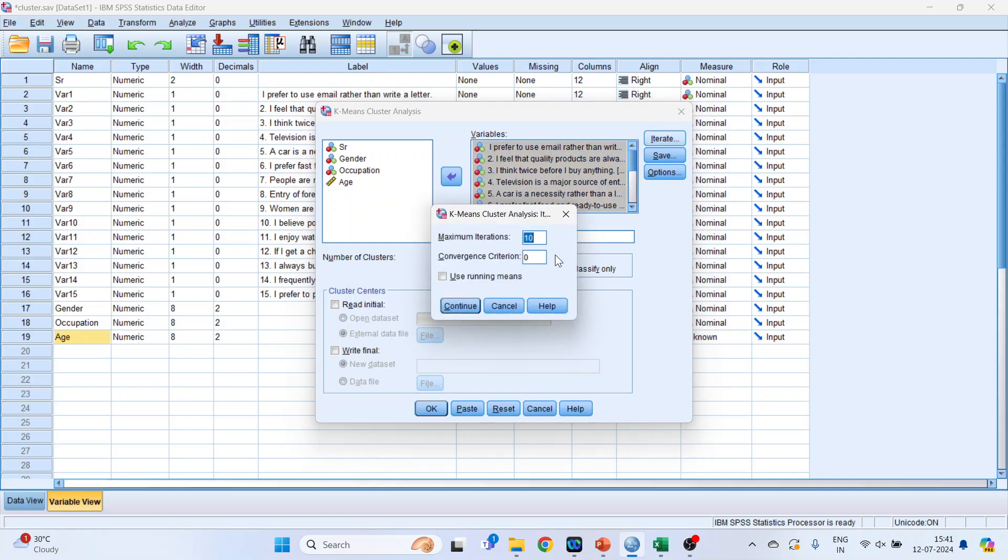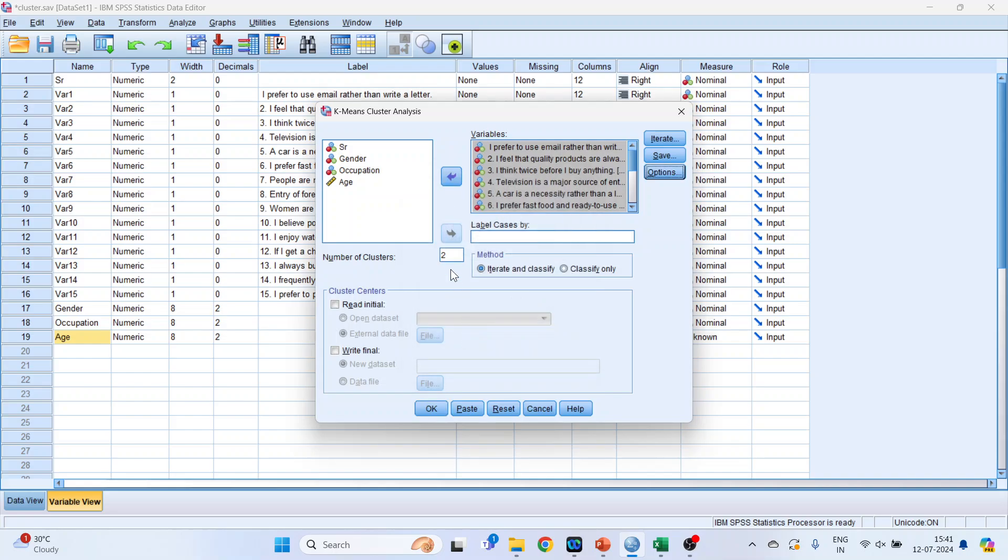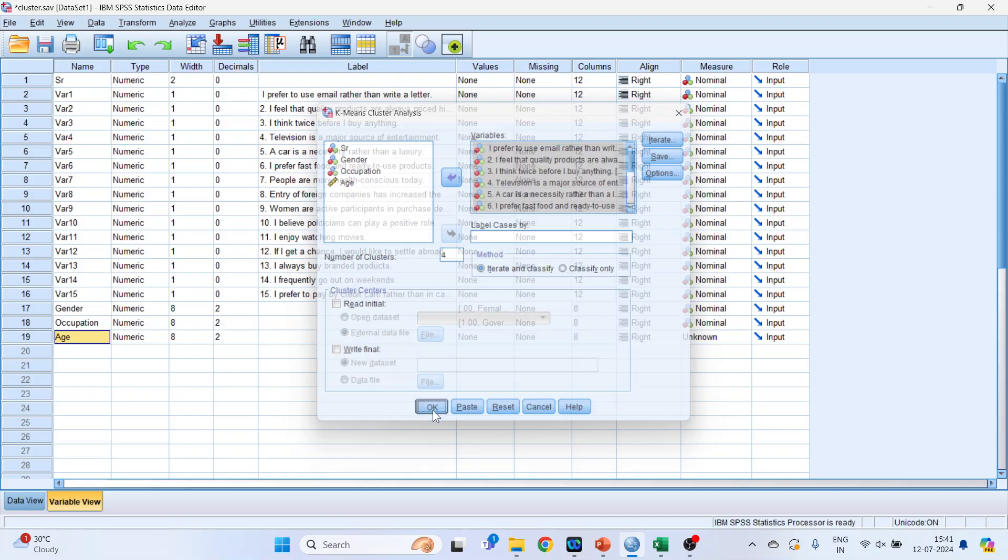I trade. Keep as it is. Save. Cluster membership. Continue. Options. Anova table. Continue. Number of clusters 4. And click OK.